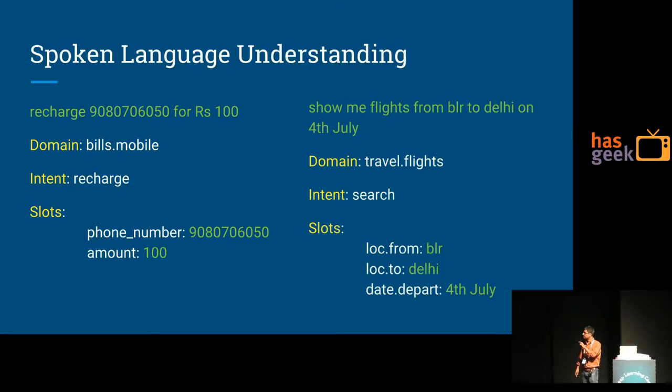Another example: show me flights from BLR to Delhi on 4th July. Domain travel or flights, intent search - there could be other intent like book a flight also - and slots. There are three slots that the user tells you: the location.from which is BLR, location.to which is Delhi, and date of departure. Note that he hasn't told you how many people are traveling, food preferences, time he wants to fly, stuff like that. There's a bunch of slots that he provided in the first sentence and you have to interact with him to figure out. That's what the conversation is all about.